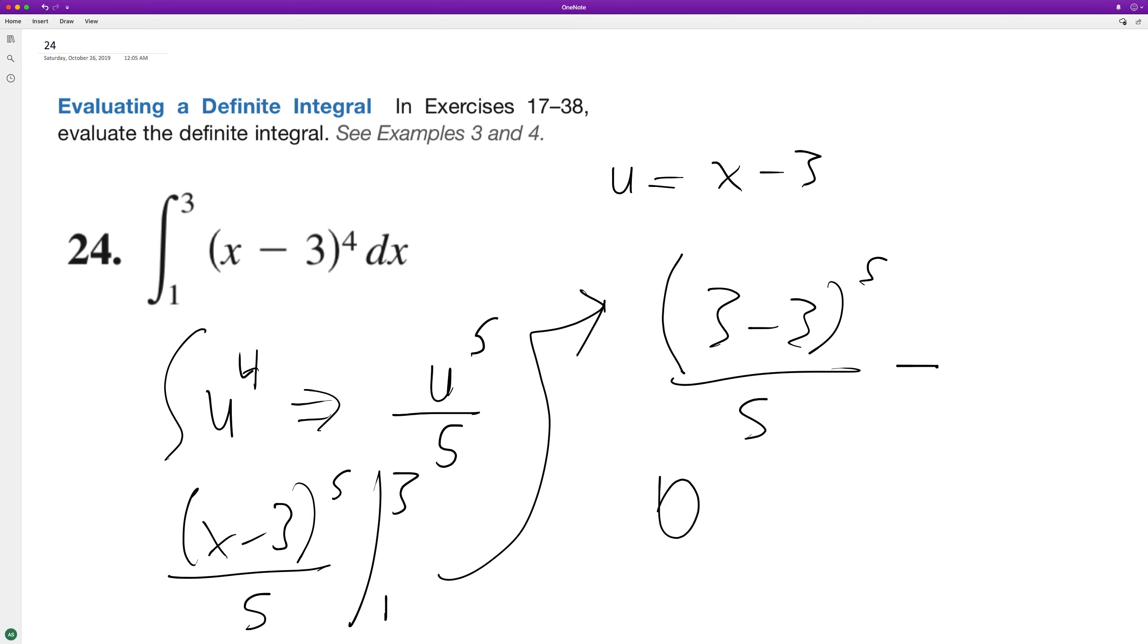And then minus, and then we have 1. So (1 minus 3) raised to the 5th over 5. So this is negative 2 raised to the 5th, which is negative 32. But we have this subtraction sign here, so it becomes positive 32 over 5.